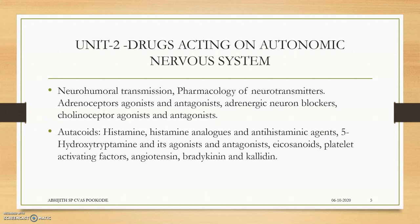Moving to Unit 2 — drugs acting on the Autonomic Nervous System. Here we deal with neuro-humoral transmission, main neurotransmitters in the autonomic nervous system, and its divisions: the Sympathetic and Parasympathetic systems. In the Sympathetic system, we deal with sympathetic agonists and antagonists. In the Parasympathetic system, we deal with agonists and antagonists. We also cover autacoids such as histamine, histamine analogues, antihistamines, serotonin agonists and antagonists, eicosanoids, platelet-activating factors, angiotensin, bradykinin, and kallidins.